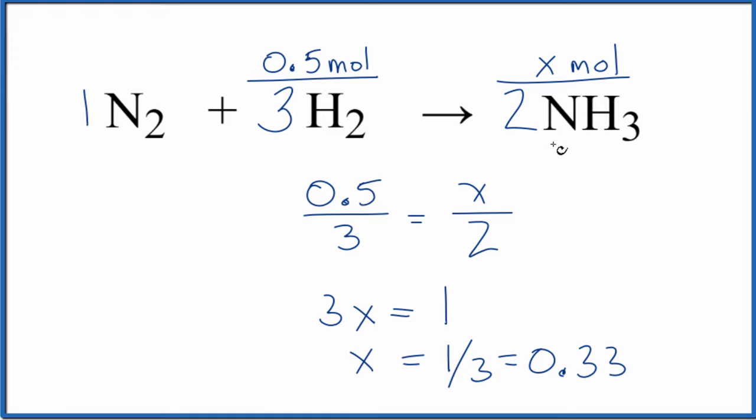That's rounded. So we end up with 0.33 moles of NH3 if we start with 0.5 moles of hydrogen. And that's with excess nitrogen here. So we could just set these ratios up like this and solve our problem.